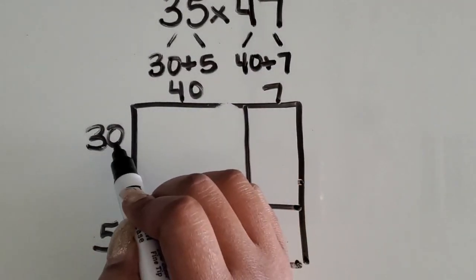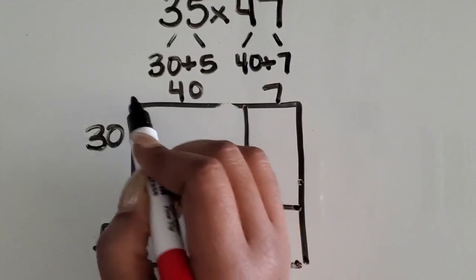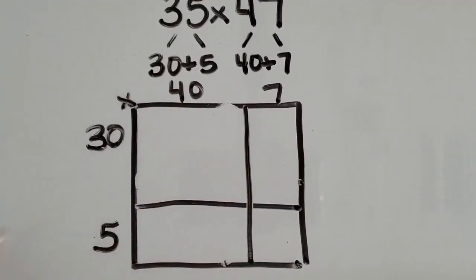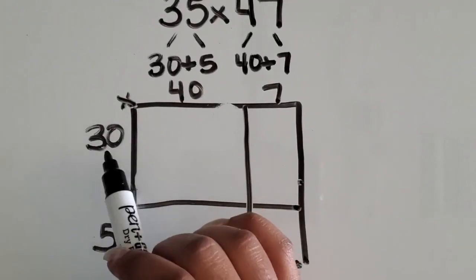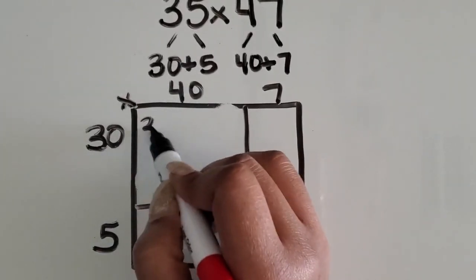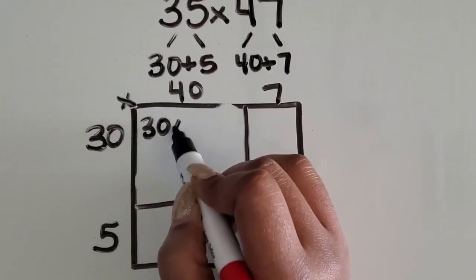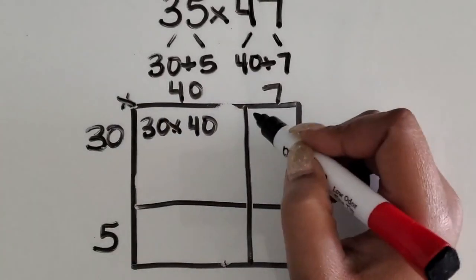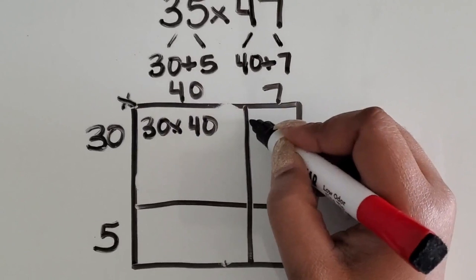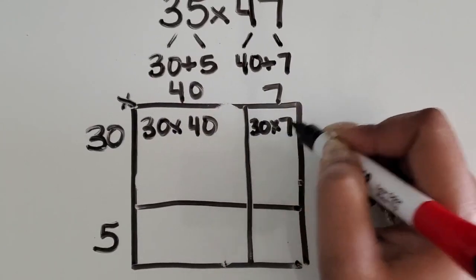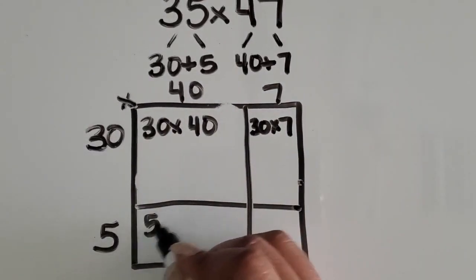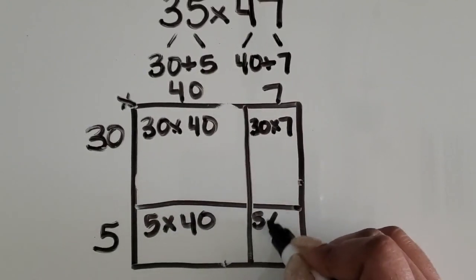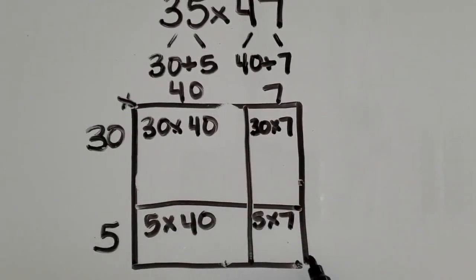Next I would have them write a symbol, the multiplication symbol here just to remember that they're multiplying and to write the expressions in each space that they're finding the products for. So we have 30 times 40 here, 30 times 7 here, 5 times 40 here, and then 5 times 7 in this smaller piece at the bottom.